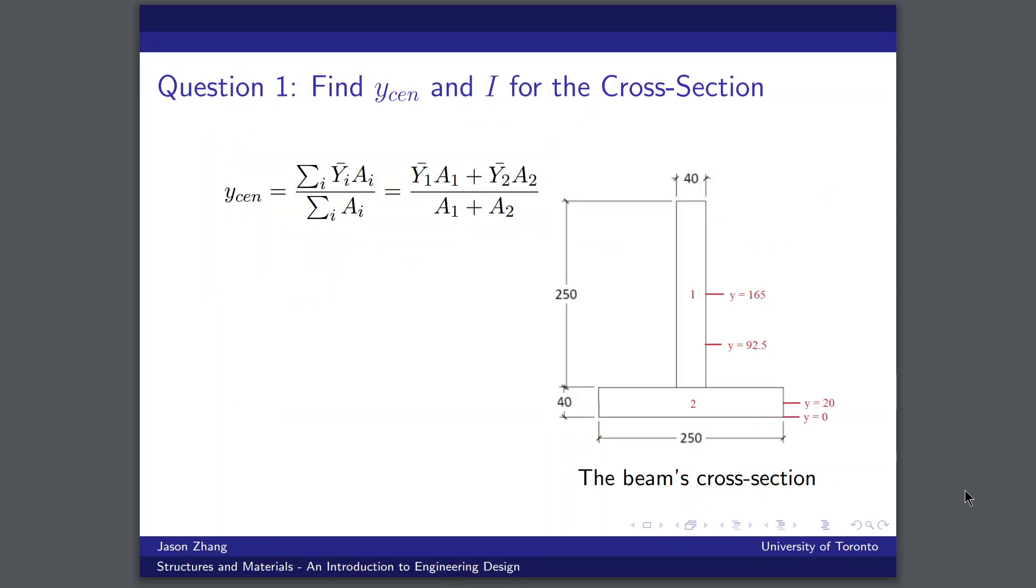So to begin with question one, all we need for this part is the beam's cross-section, which I've shown on the right. And you can think of the location of the centroidal axis of this cross-section as being like a weighted average of the individual components of the cross-section. So I've labeled in red the two rectangles that I've split the cross-section into. So we have rectangle one and rectangle two.